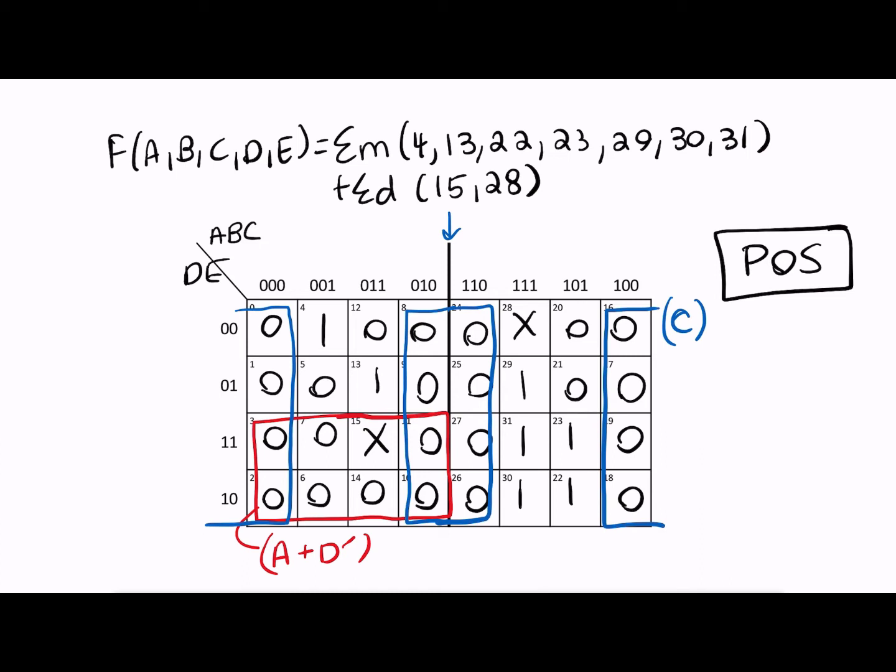So I have max terms 5 and 12 that still haven't been looped. So I definitely have to think about what are all the different ways I could loop 5 or 12. So one of the ways that I could loop 5 is looping it with 1, 3, and 7. So 1, 3, 5, and 7 is one of my loops, one of my prime implicants. And this is equal to A plus B plus E prime.